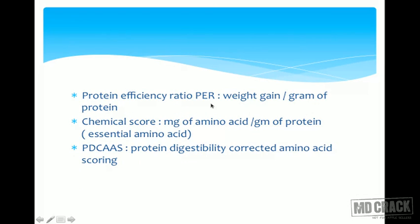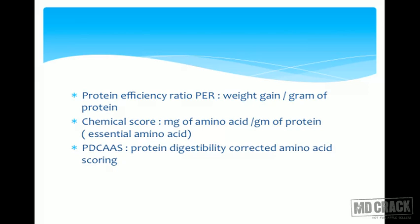Protein efficiency ratio (PER) is weight gain per gram of protein taken. Chemical score is milligrams of essential amino acid per gram of protein, reflecting the essential amino acid composition. PDCAAS — protein digestibility corrected amino acid score — looks at the chemical score but also takes protein digestibility into consideration. Standard tables are available for biological value, NPU, PER, chemical score, and PDCAAS for different proteins.